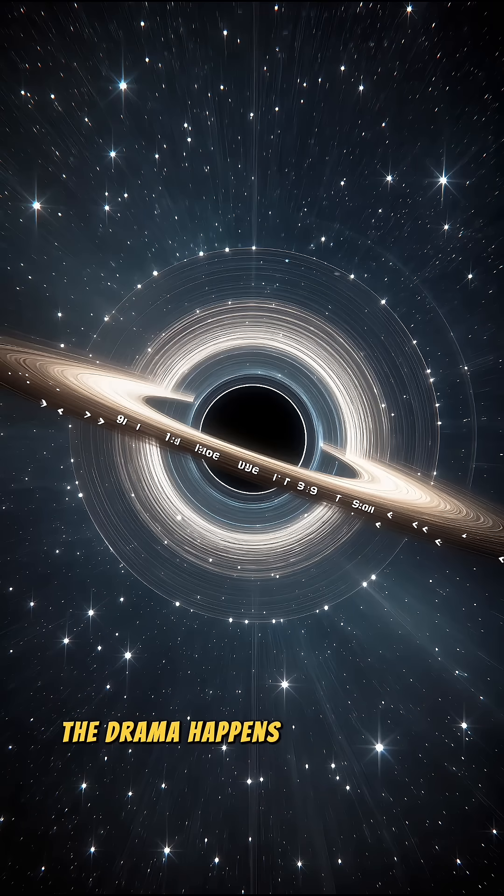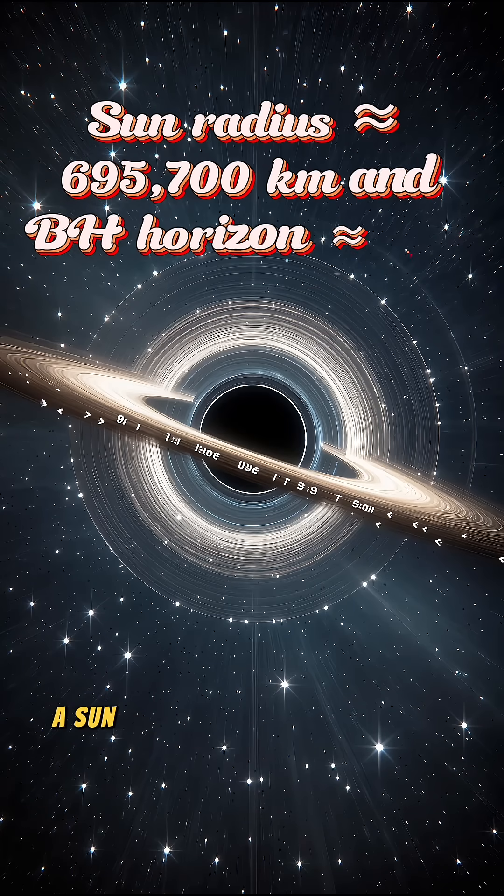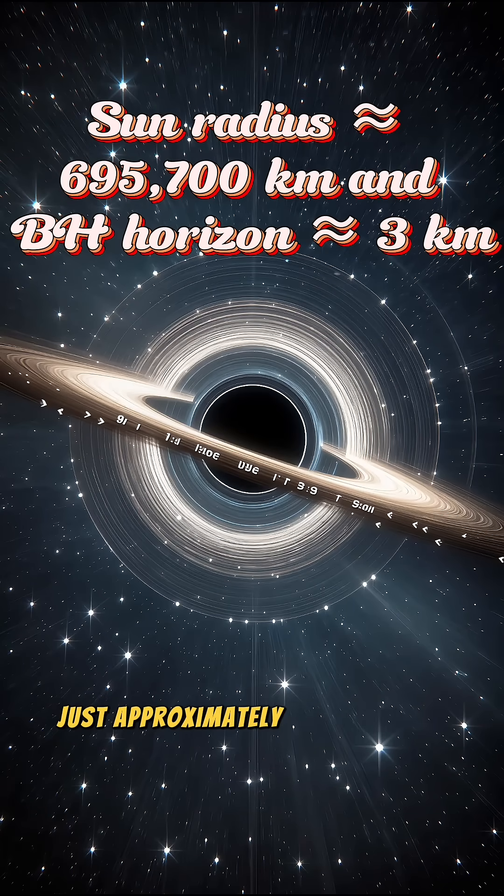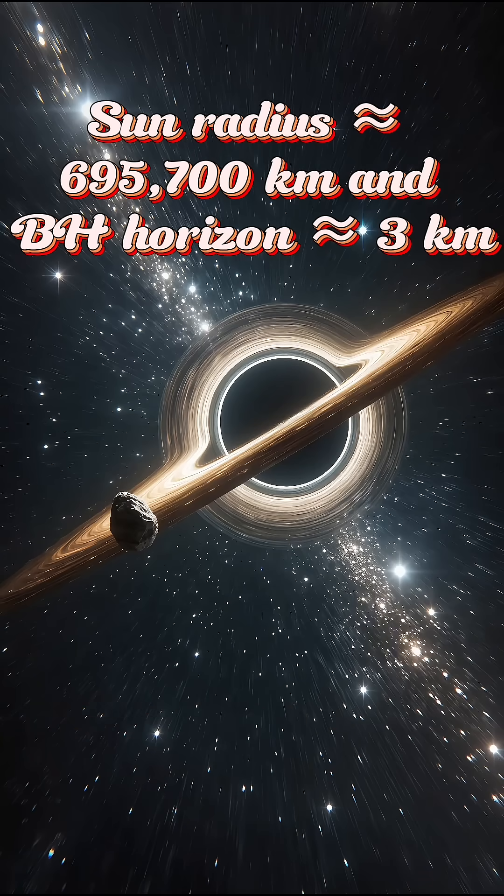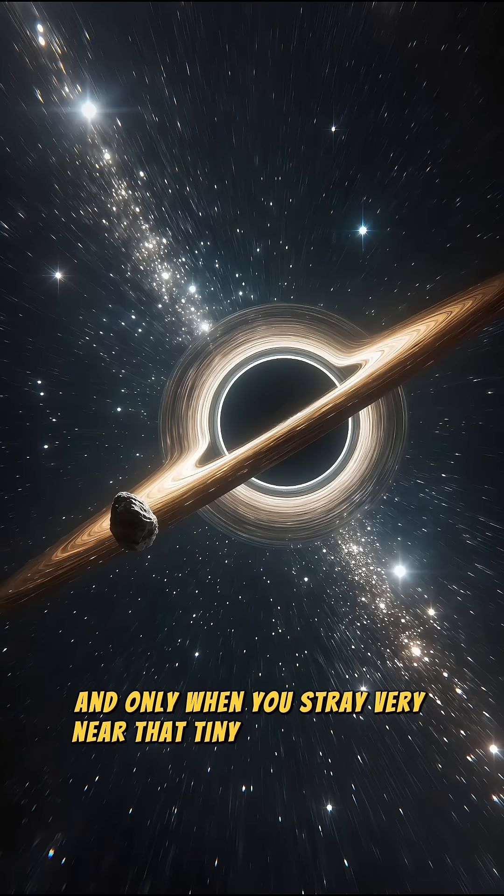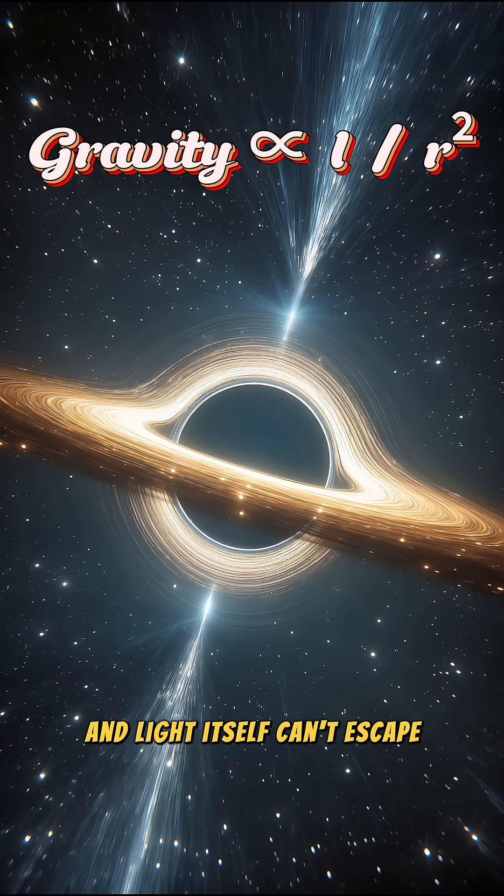The drama happens only up close. A sun mass black hole would have an event horizon just approximately three kilometers across, and only when you stray very near that tiny radius do tides spike and light itself can't escape.